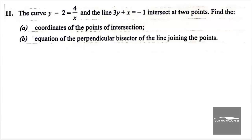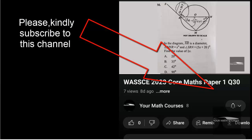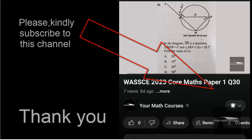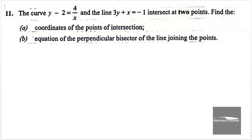Would you like us to solve all the other questions in this paper? This is the 2024 private candidates Elective Mathematics further mathematics paper one. The question says that the curve y minus 2 equals 4 over x, and the line 3y plus x equals negative 1, intersect at two points. Find the coordinates of the points of intersection.